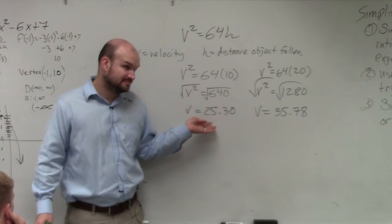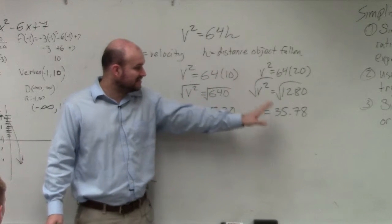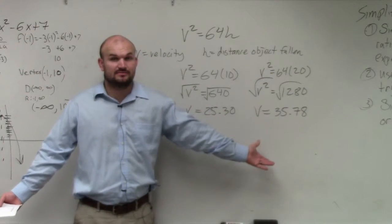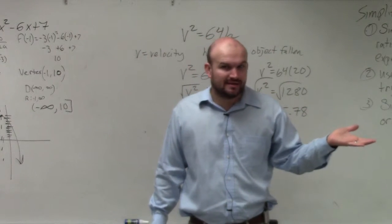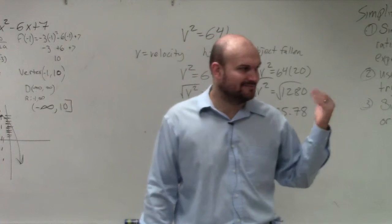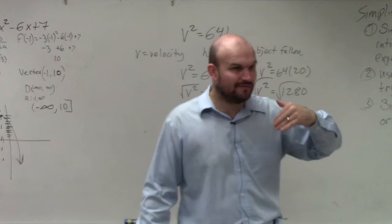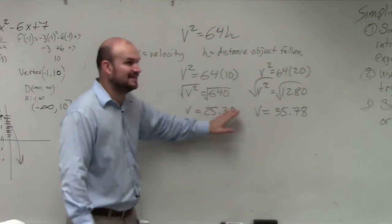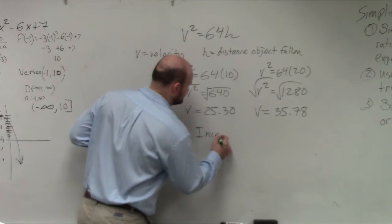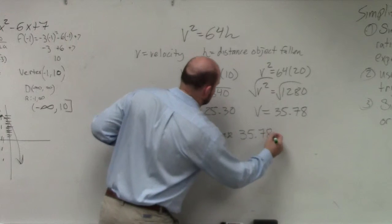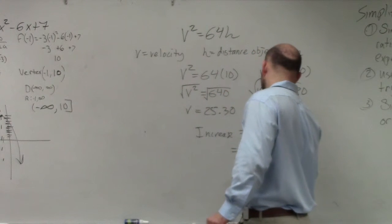So here's your first initial velocity when it has fallen 10 feet. Now here's the velocity when 20 feet. It's asking for what the increase is. So what is increase? If before break I made $20, and then after break I made $50, what was the increase from before break to after break? 30. So to find the increase, we're going to subtract our maximum from our minimum and see what the increase is. So the increase they're asking is 35.78 minus 25.30, and that equals 10.48.